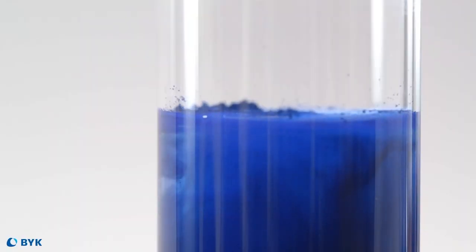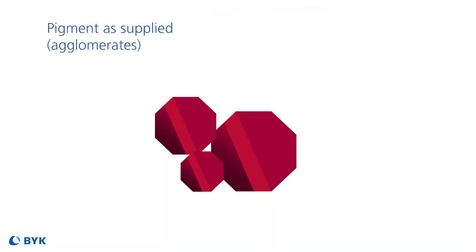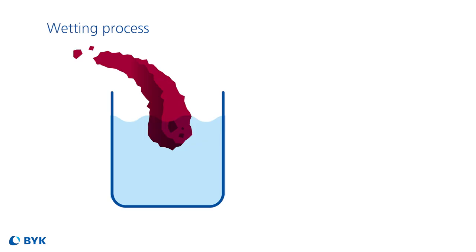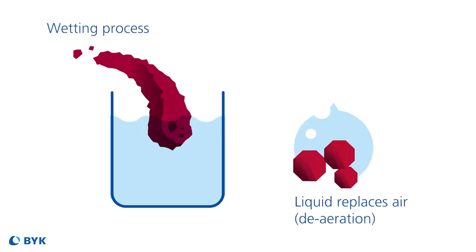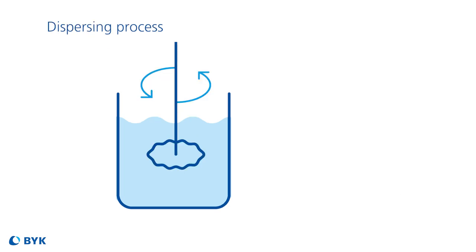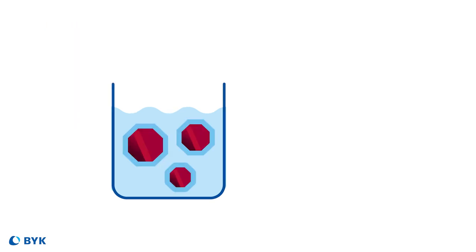When pigments are introduced into the system, they are not primary particles — they are agglomerates. The agglomerates are groupings of particles that include the pigment, air, and moisture with cohesive forces that keep them together. We use the wetting and dispersing additives to displace the air and wet the agglomerate surfaces. Then we introduce some sort of mechanical shear to break up the agglomerates. Finally, the wetting and dispersing additives have the benefit of stabilizing the pigment particles from re-agglomeration.